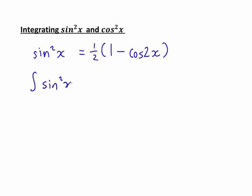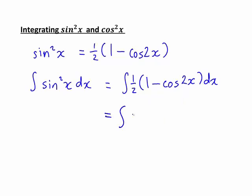Considering then the integral of sin squared x with respect to x, that is the same as the integral of 1 half times 1 minus cos 2x with respect to x. So that's just integrating both sides of our identity above. This expression here on the right is actually a lot easier to integrate. So we can expand the brackets. That's just the integral of 1 half minus 1 half cos 2x with respect to x.